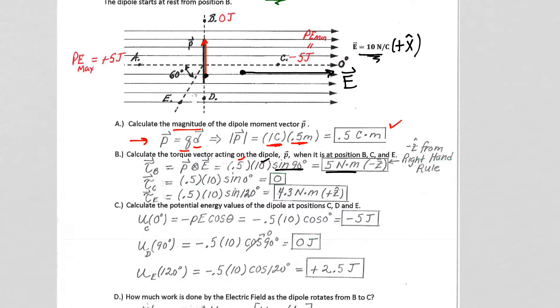Now, when the dipole is pointing to point C, so when the dipole points to C, we get sine of 0 degrees. Angle between the two, sine of 0 is 0, 0 torque.